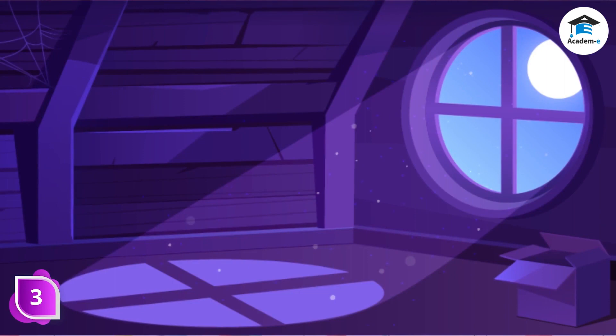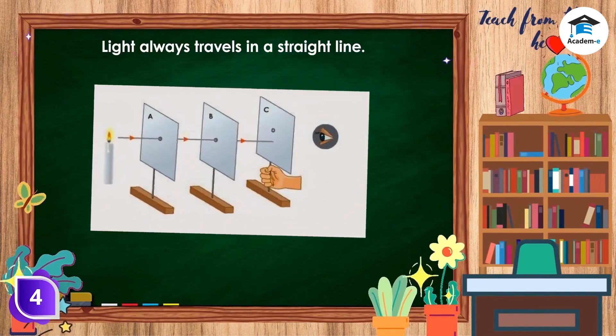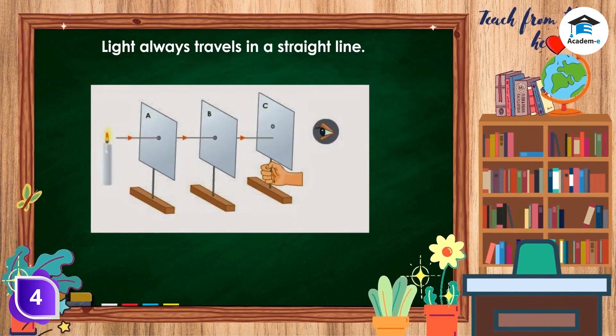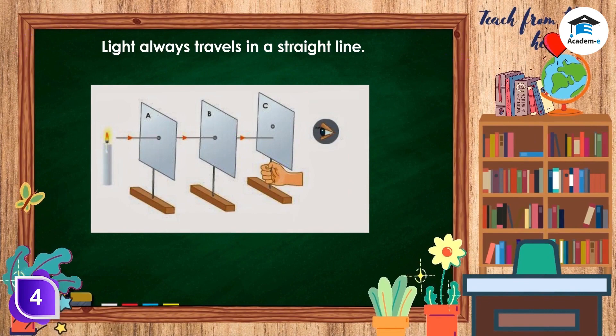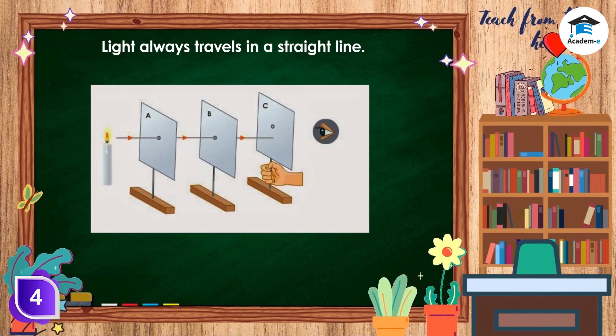You have learned recently about light energy. Today, you will learn more about light energy and how it behaves when it strikes an object in its path. Light always travels in a straight line. When it strikes an object that is in its path, its behavior depends mainly on the kind of material that the object is made of.